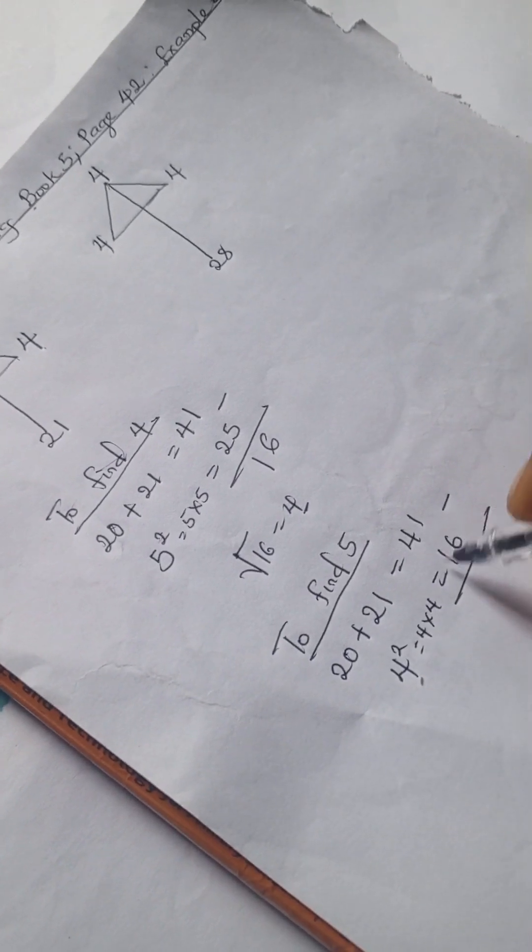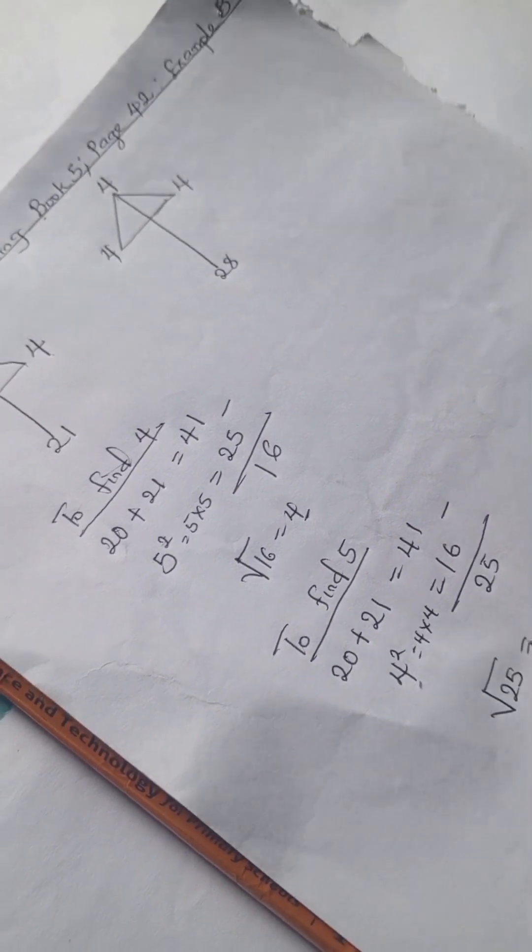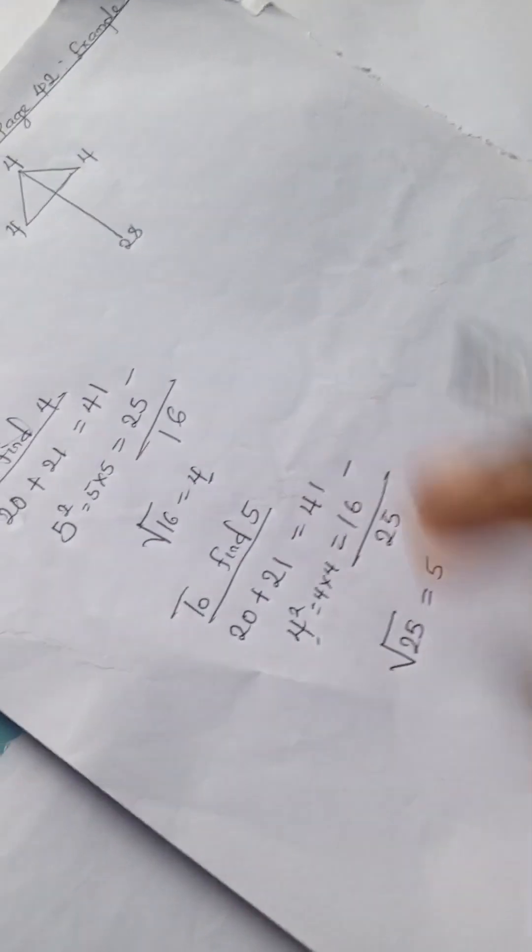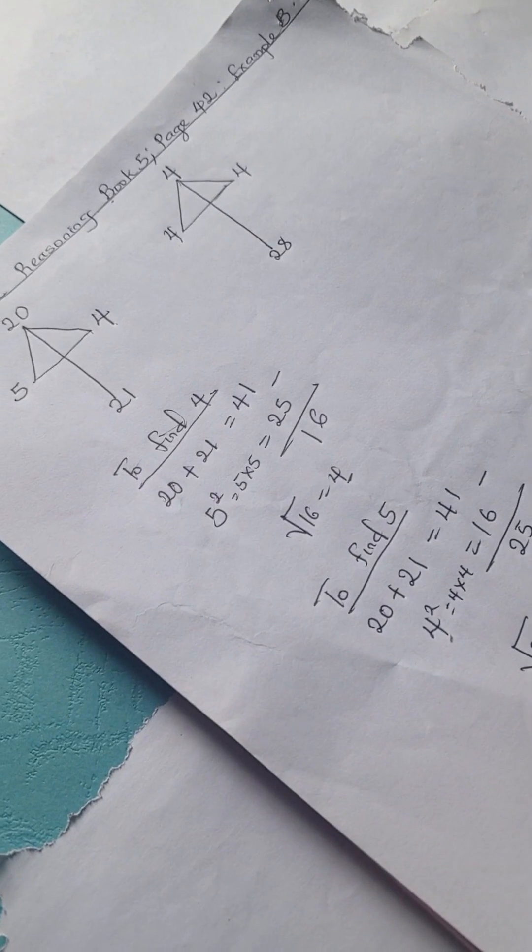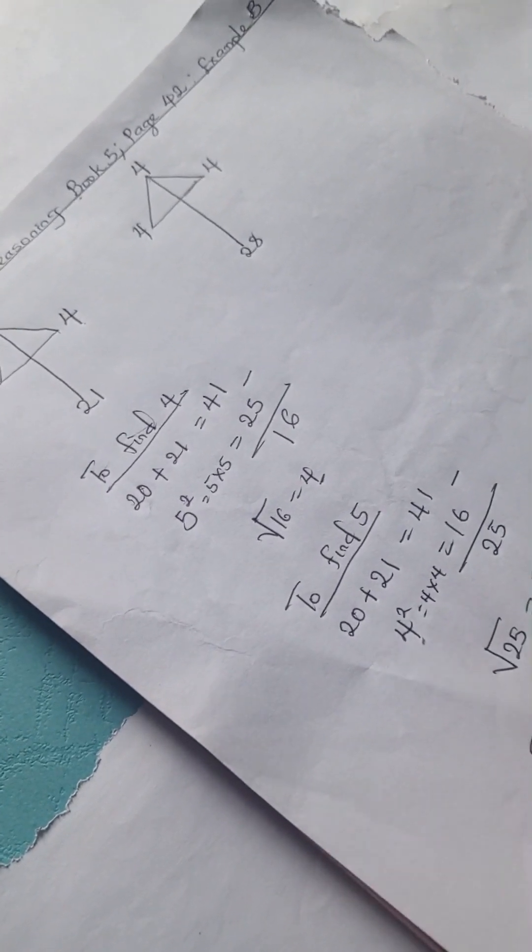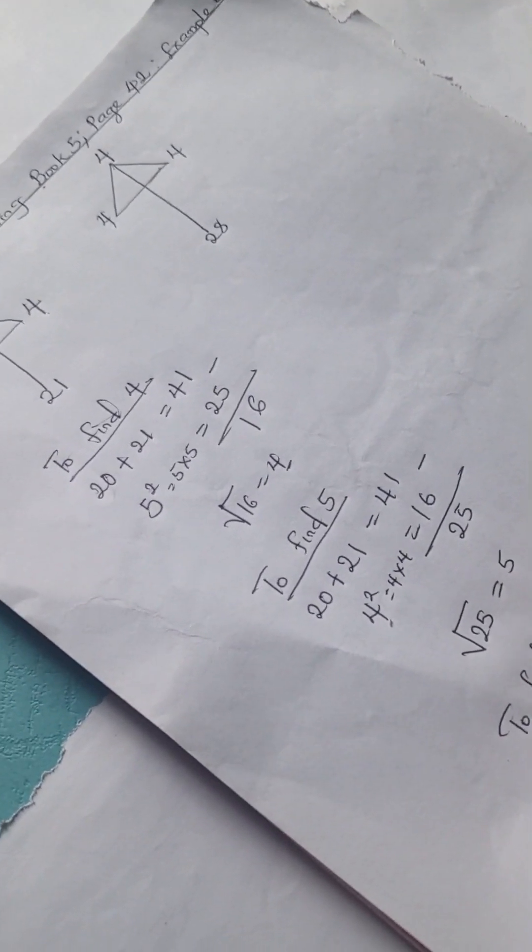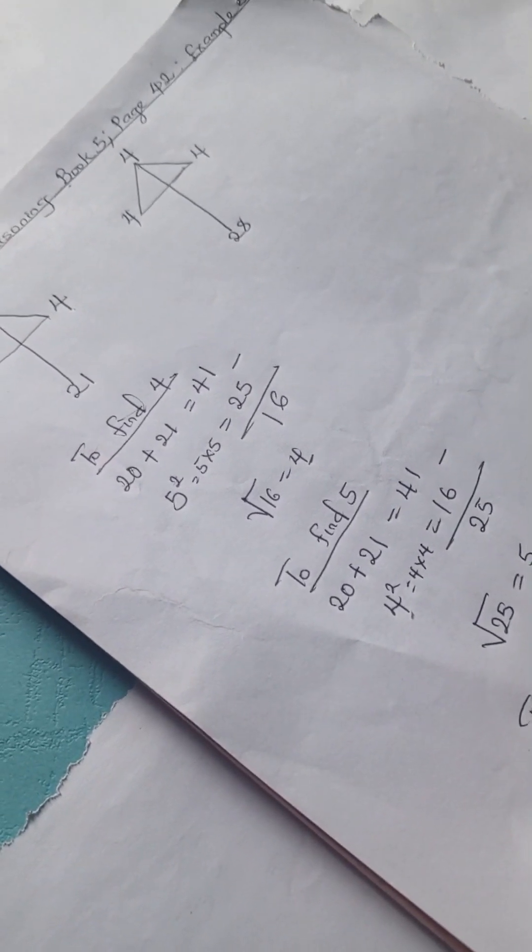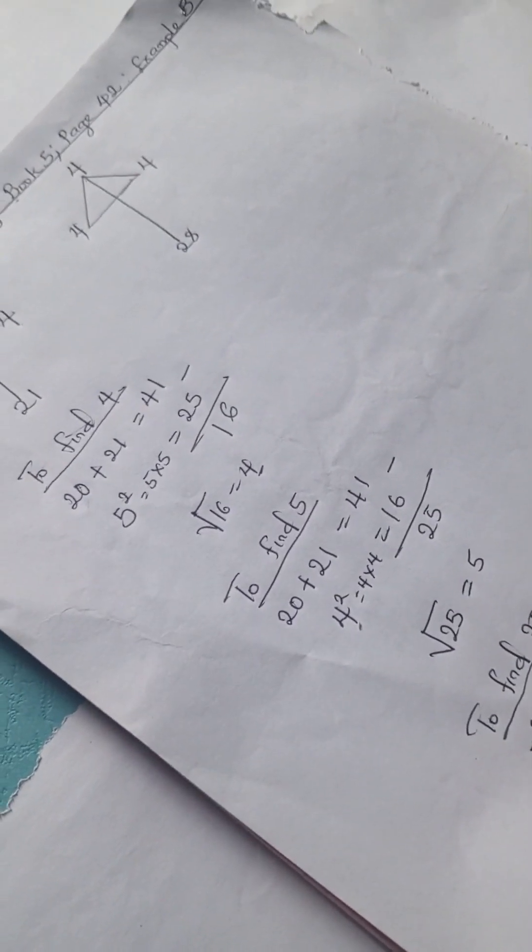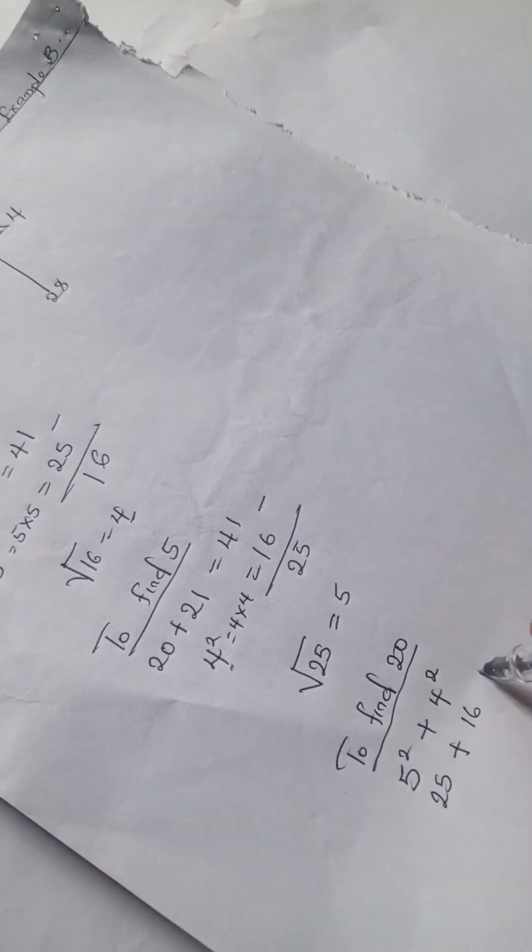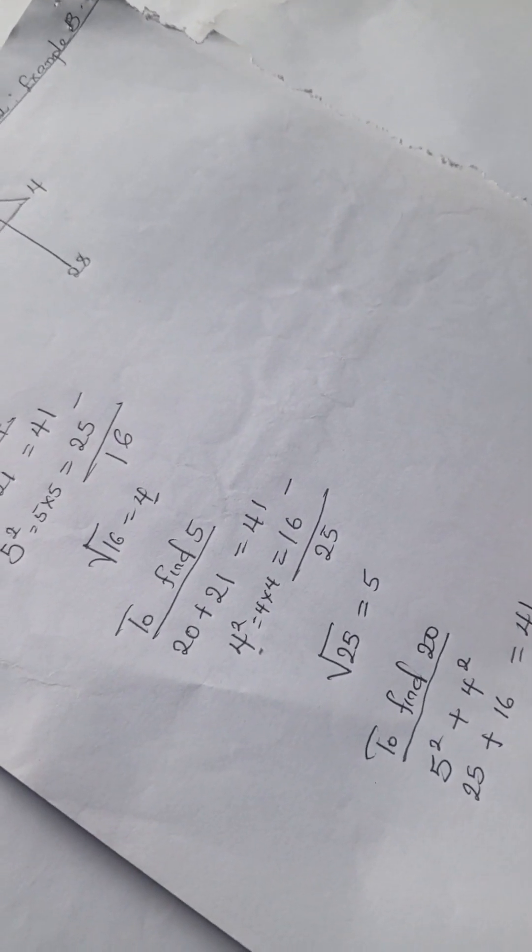Next, we're going to find 20. To find 20, we have 5 squared plus 4 squared. Here we have 25 plus 16, which equals 41. 41 minus 21 gives you 20.